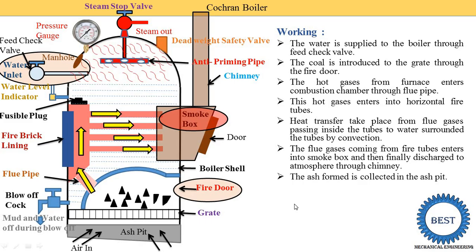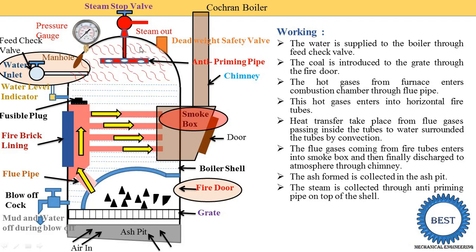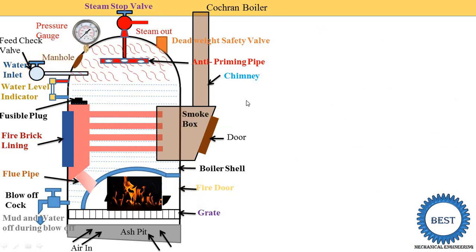The ash formed during combustion is collected in the ash pit. Steam is collected through the anti-priming pipe at the top of the shell. The moisture present in the steam is removed by the anti-priming pipe, and then the dry steam is supplied to the steam stop valve, which delivers steam whenever it is required.